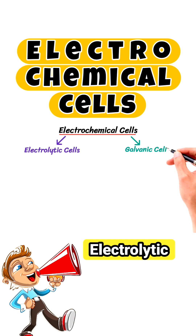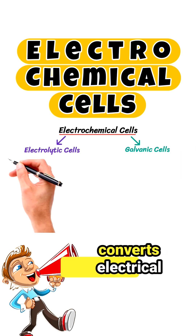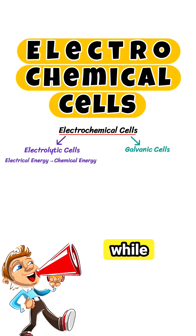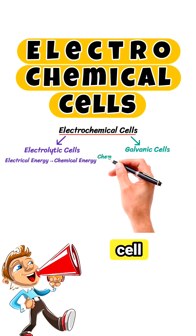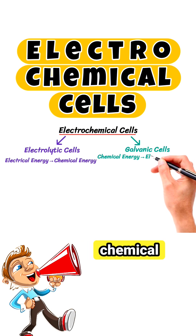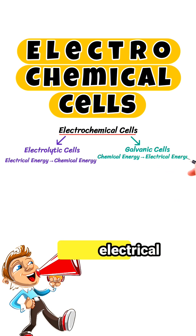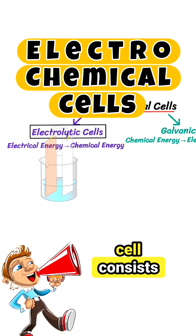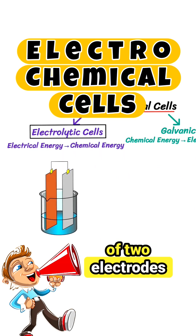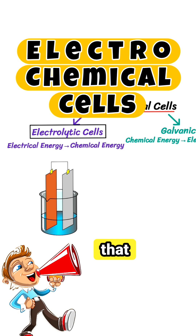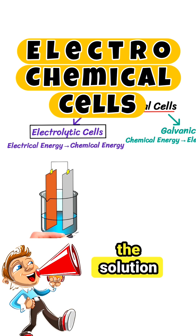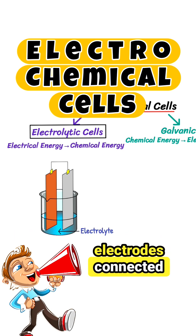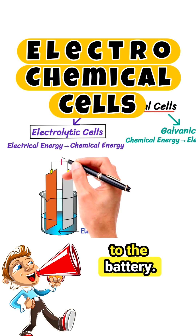Electrolytic cell converts electrical energy into chemical energy, while galvanic cell converts chemical energy into electrical energy. An electrolytic cell consists of two electrodes that are dipped in the solution known as electrolyte, and both electrodes are connected to the battery.